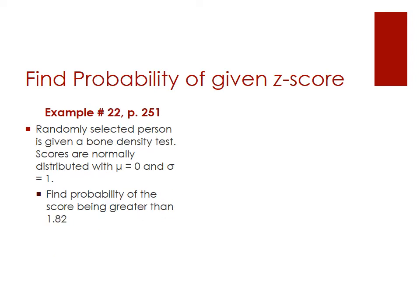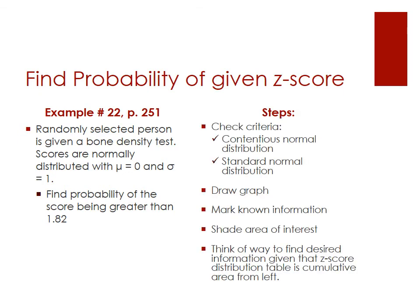Now let's look at a different problem. Using the same distribution, we're asked to find the probability of a score being greater than 1.82. We've already checked our criteria for continuous normal distribution and standard normal distribution, so we're ready to move on to graphing, marking the known information, and shading our area of interest. Stop the video, draw a quick sketch, mark your mean and your Z-score of 1.82, then advance to the next slide and we'll check it together.